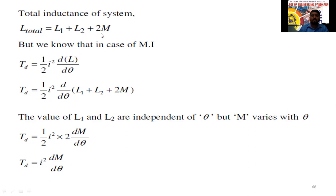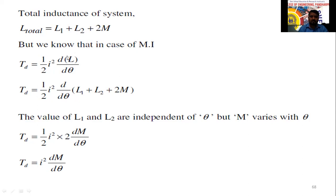From the moving iron instrument, the torque equation is: Td = ½ × I² × dL/dθ. We know this formula. Now substituting the total inductance L = L1 + L2 + 2M into this equation, we get Td = ½ × I² × d(L1 + L2 + 2M)/dθ.